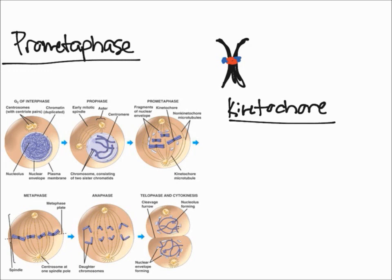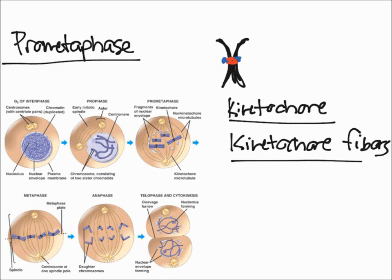Kinetochores are a protein that allows microtubules to attach to them - microtubules called kinetochore fibers. To clarify, a kinetochore is a protein that allows the kinetochore fibers to attach, and that's really important when it comes to anaphase and pulling the chromatids apart.